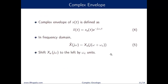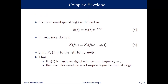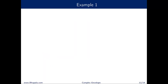Now let us move on to the complex envelope. For a signal x(t), the complex envelope is defined as x̃(t) = x_a(t)·e^(−jωct). Its Fourier transform, by the frequency shifting property, is X̃(jω) = X_a(j(ω + ωc)), which is the Fourier transform of the analytic signal shifted left by ωc. If x(t) is a band-pass signal centered at ±ωc, the complex envelope is a low-pass signal centered at the origin.